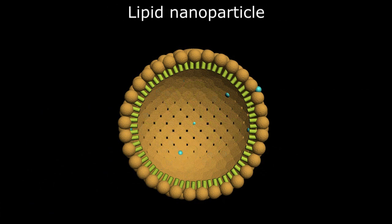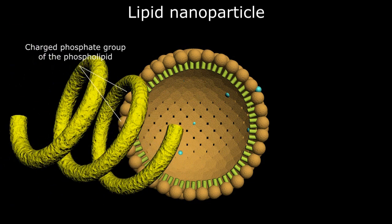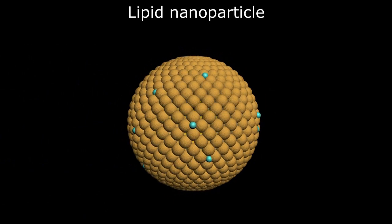Similarly, the lipid nanoparticle has a phospholipid membrane that contains and protects the delicate mRNA encoding for the spike protein to the cells of the body.